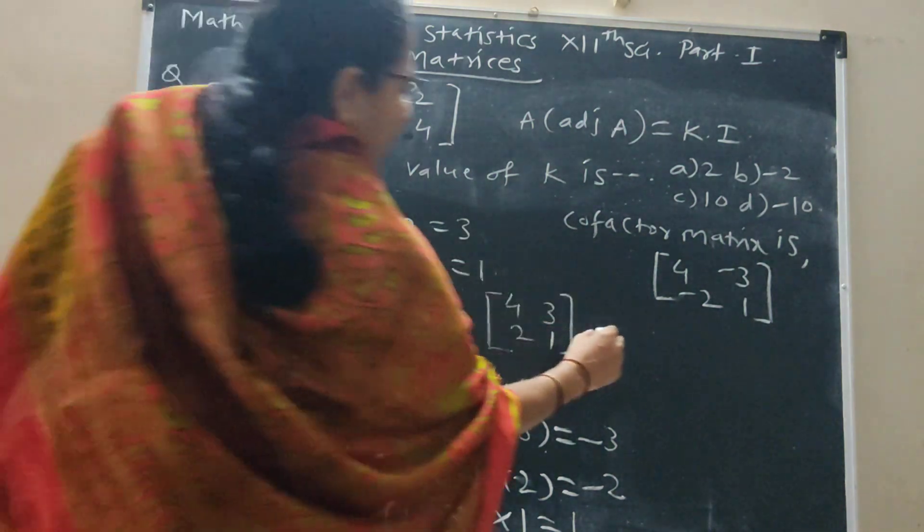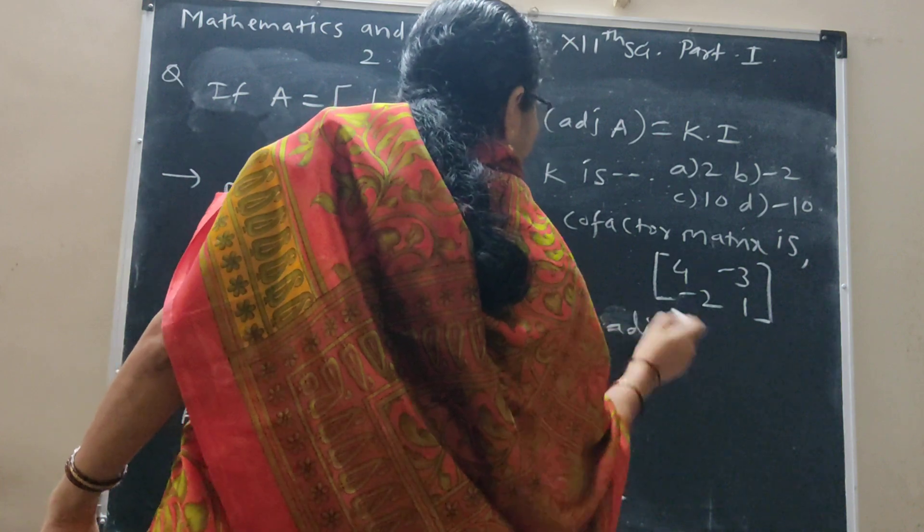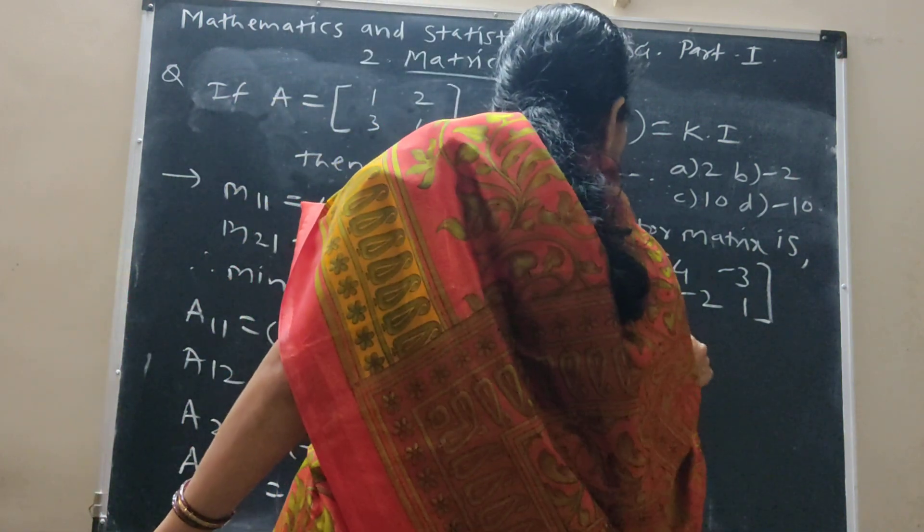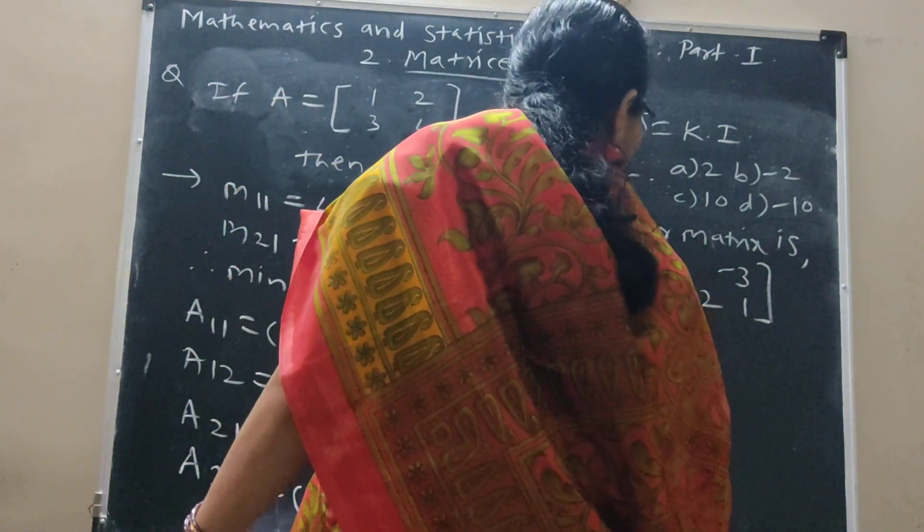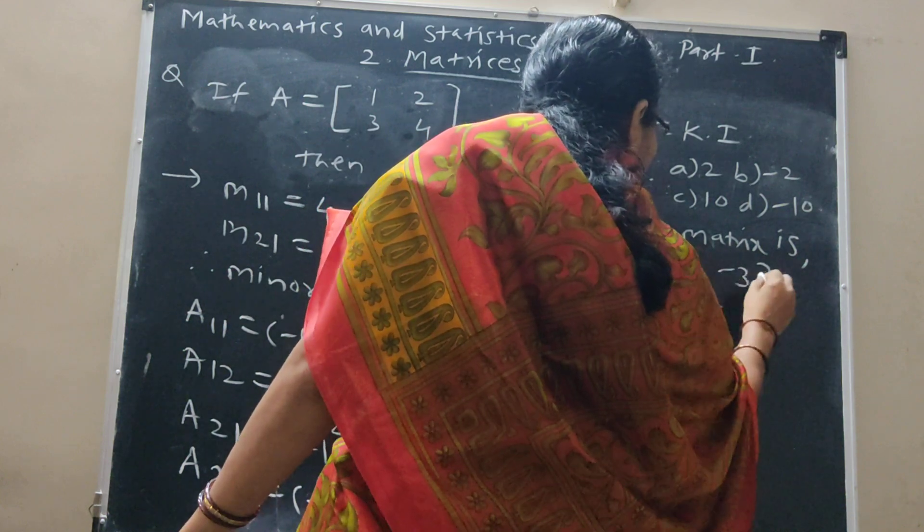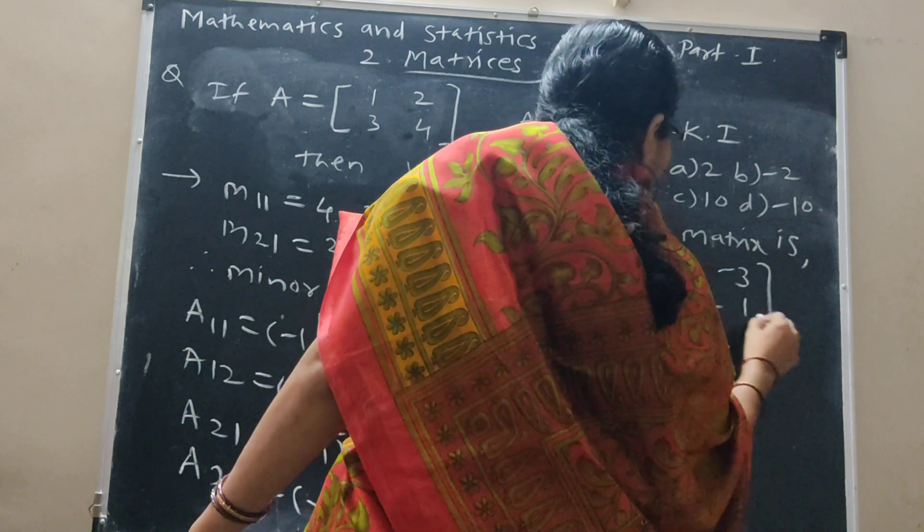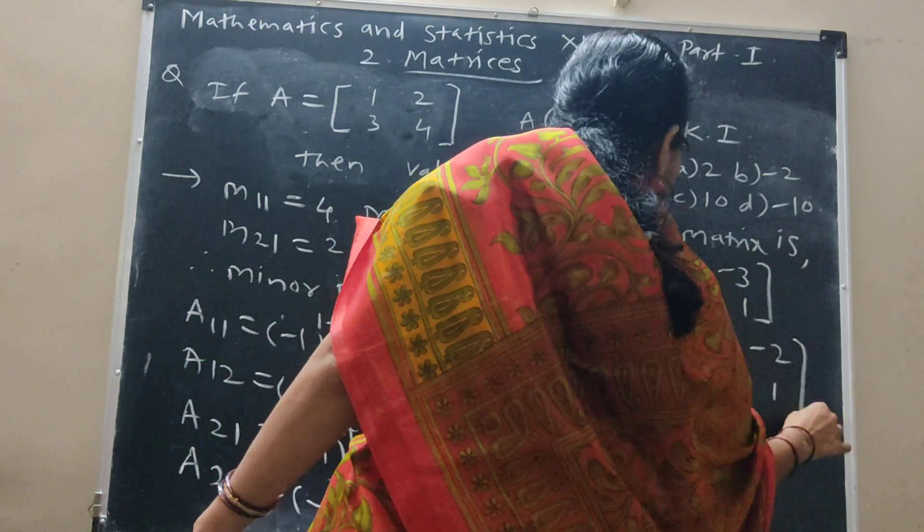Then, from this, we have to write adjoint. Adjoint is transpose of this matrix. [[4, -3], [-2, 1]]. This row becomes column. 4, -2, -3, 1. This is adjoint.